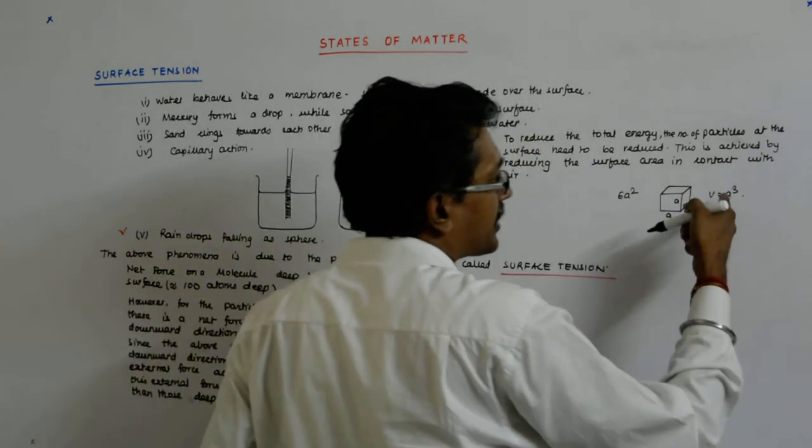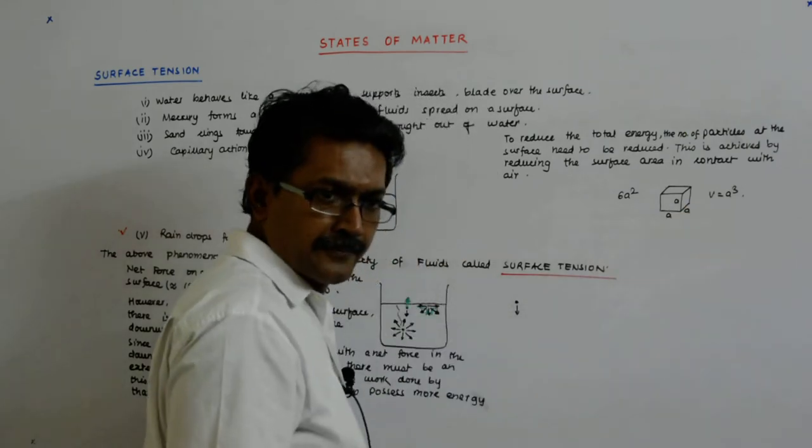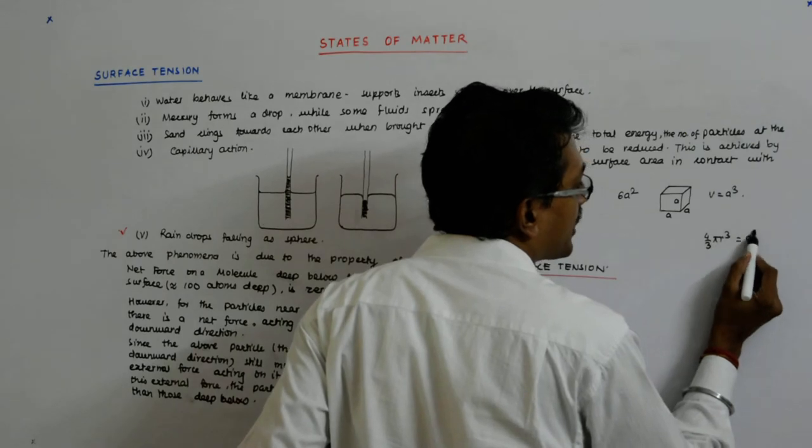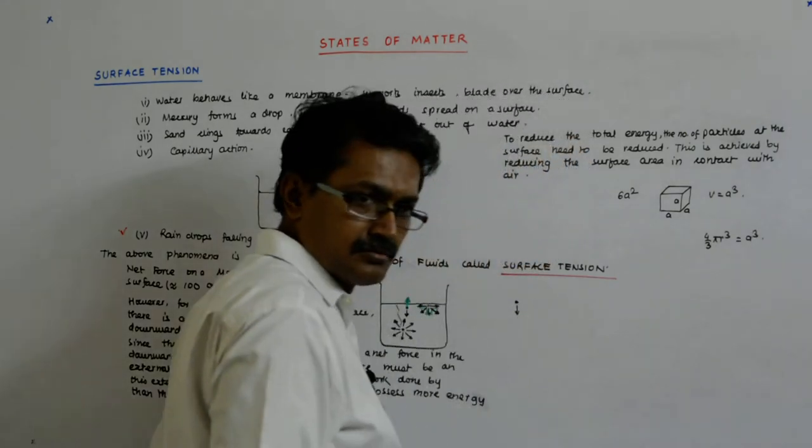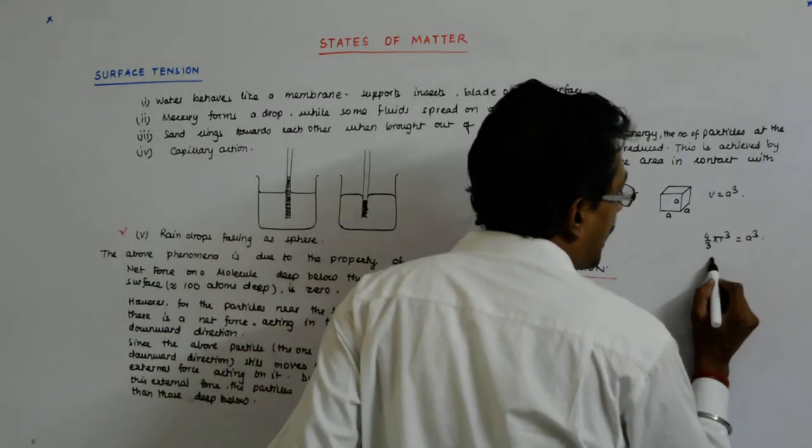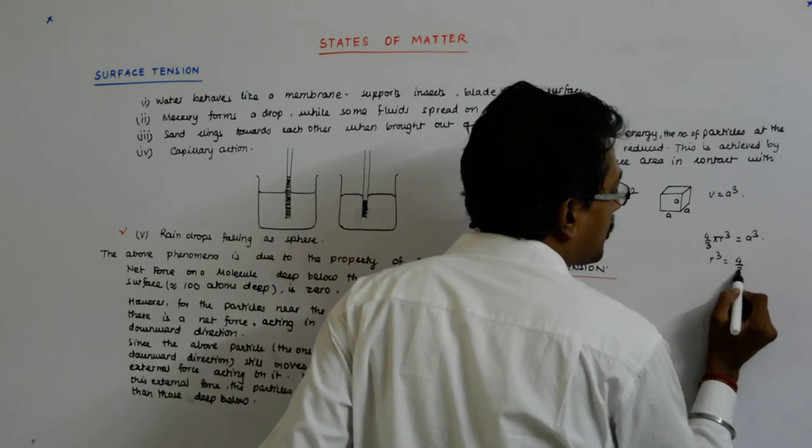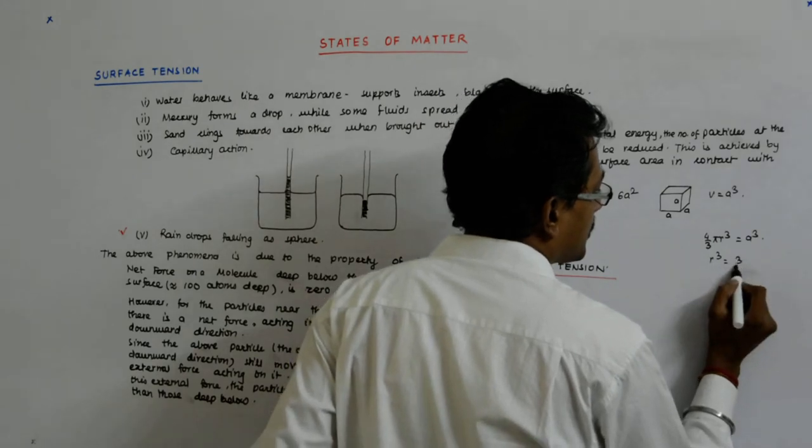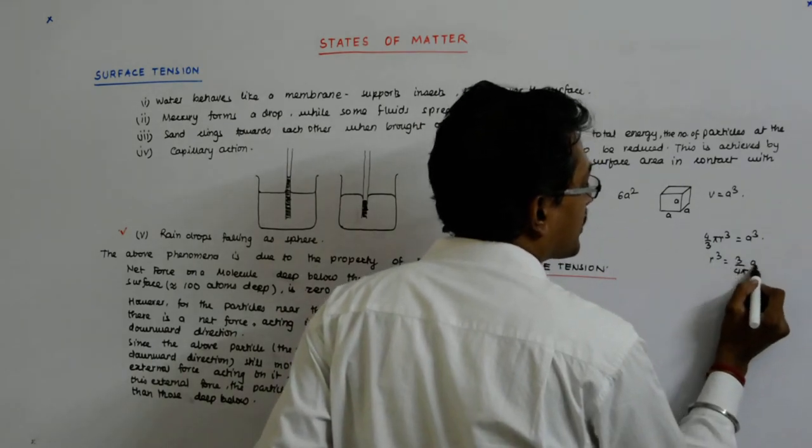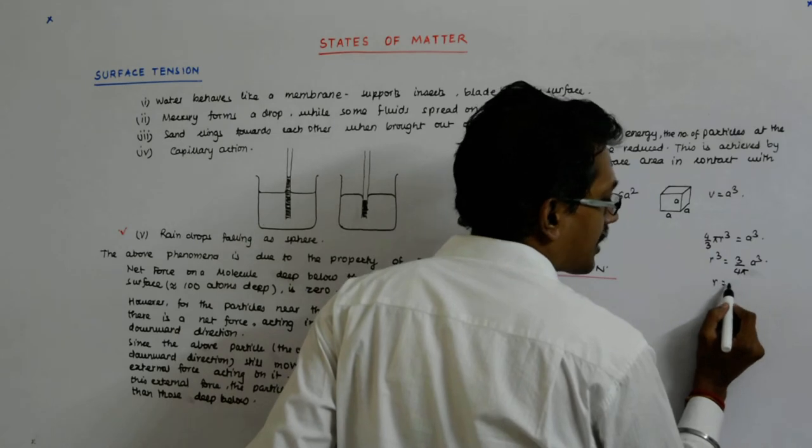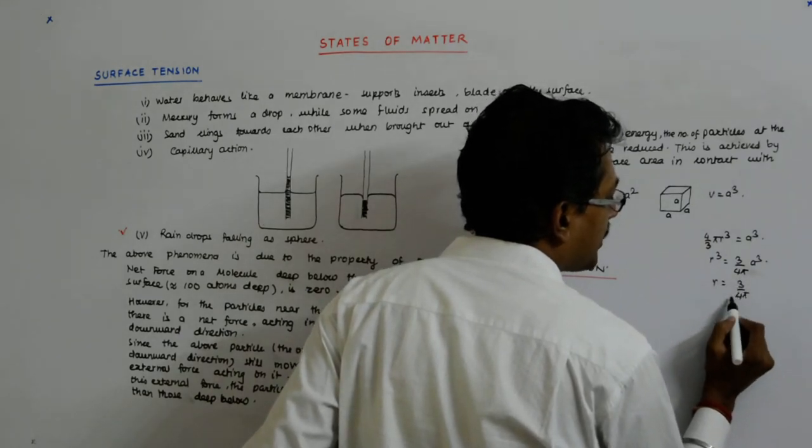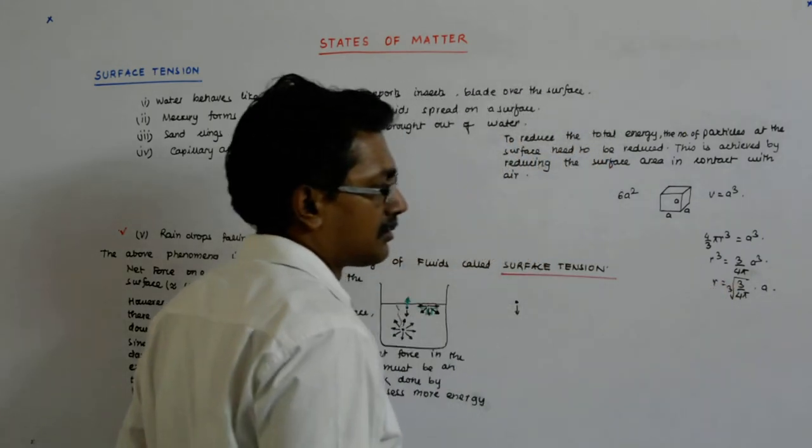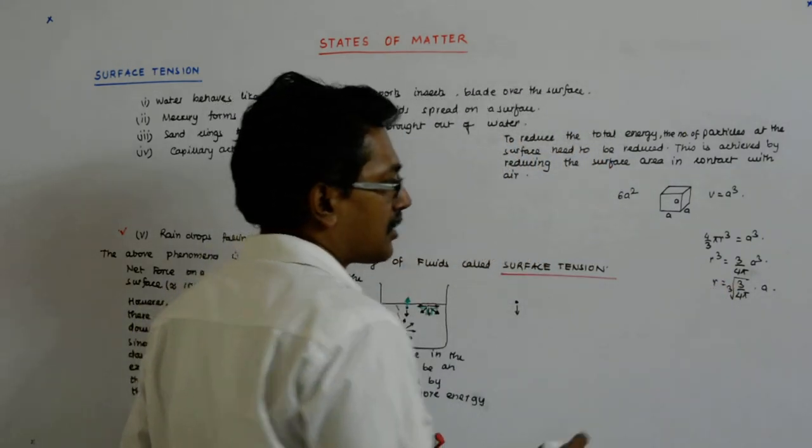Now, if I want to put this in a sphere of radius r, then 4 by 3 pi r cube is equal to a cube. Is it not? So r is equal to 3 upon 4 pi a cube. So r is equal to 3 upon 4 pi cube root of that into a.